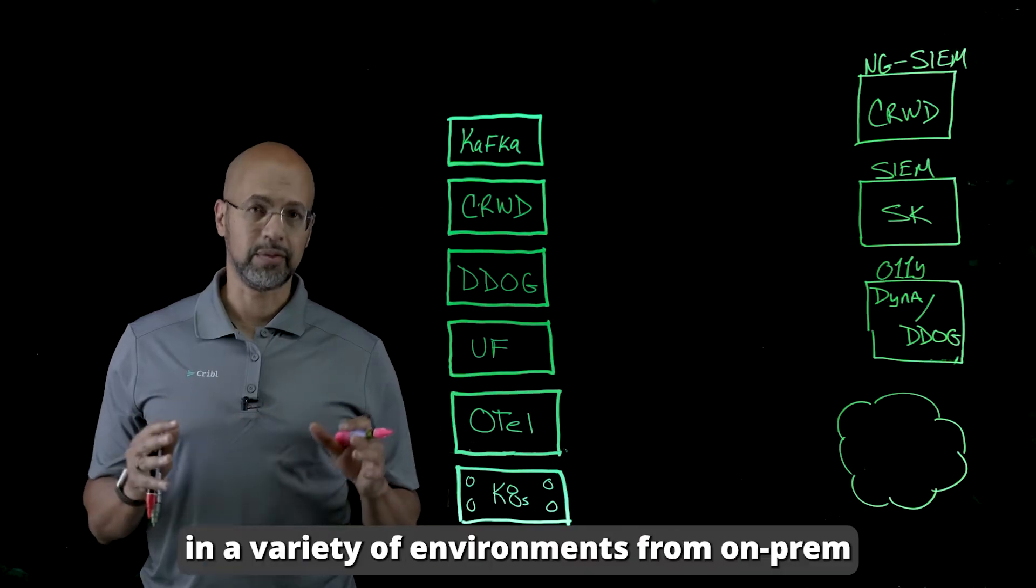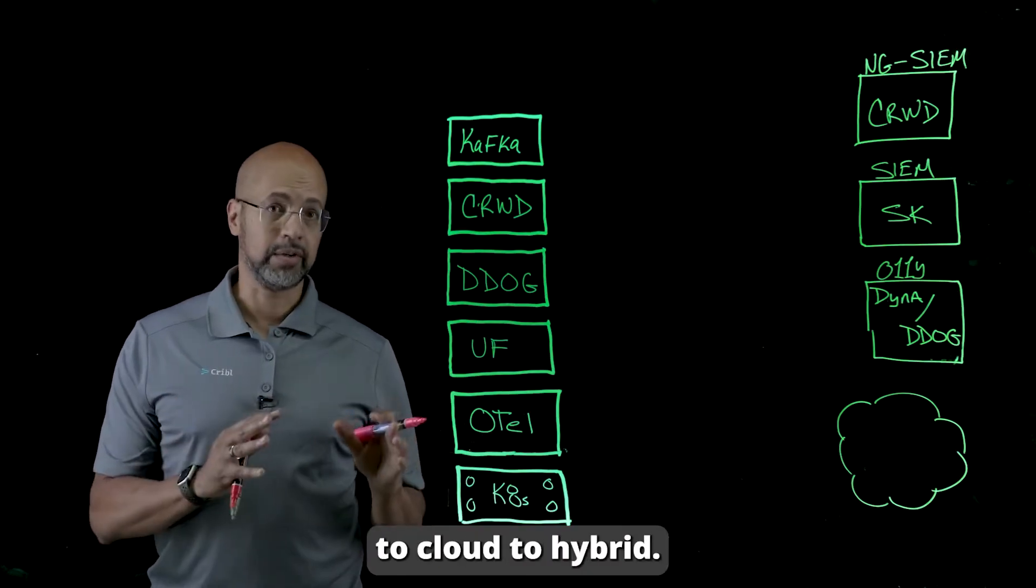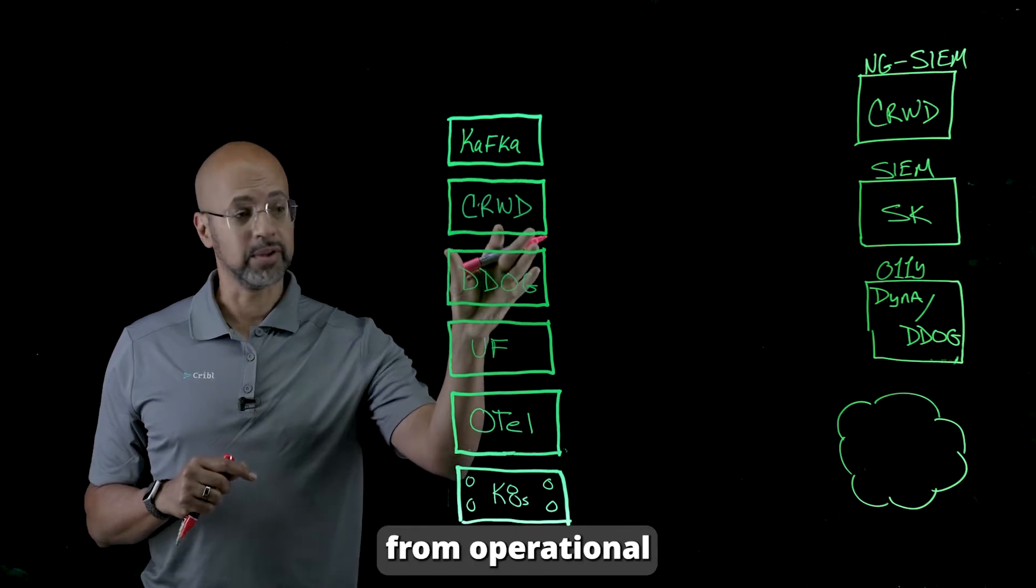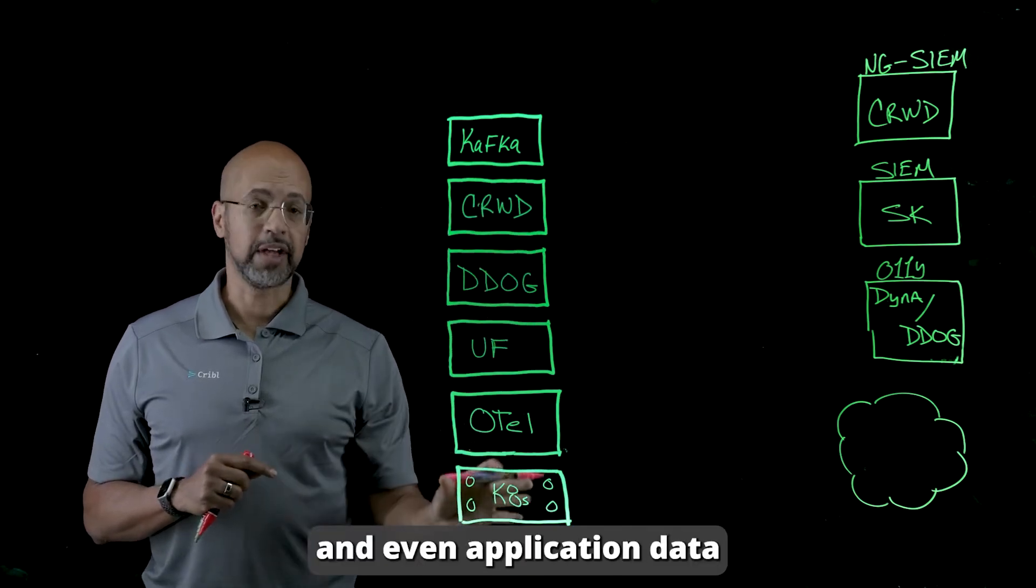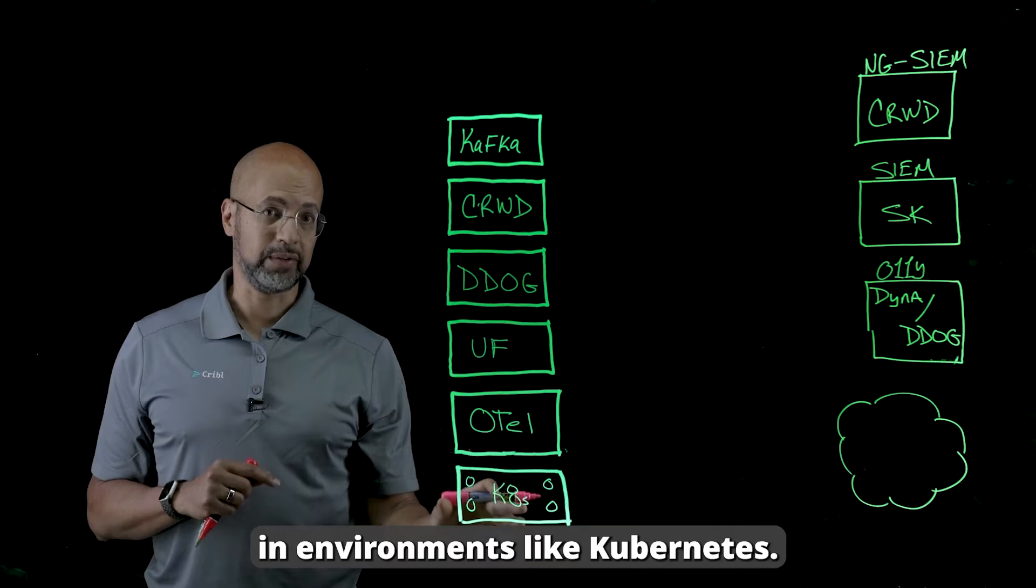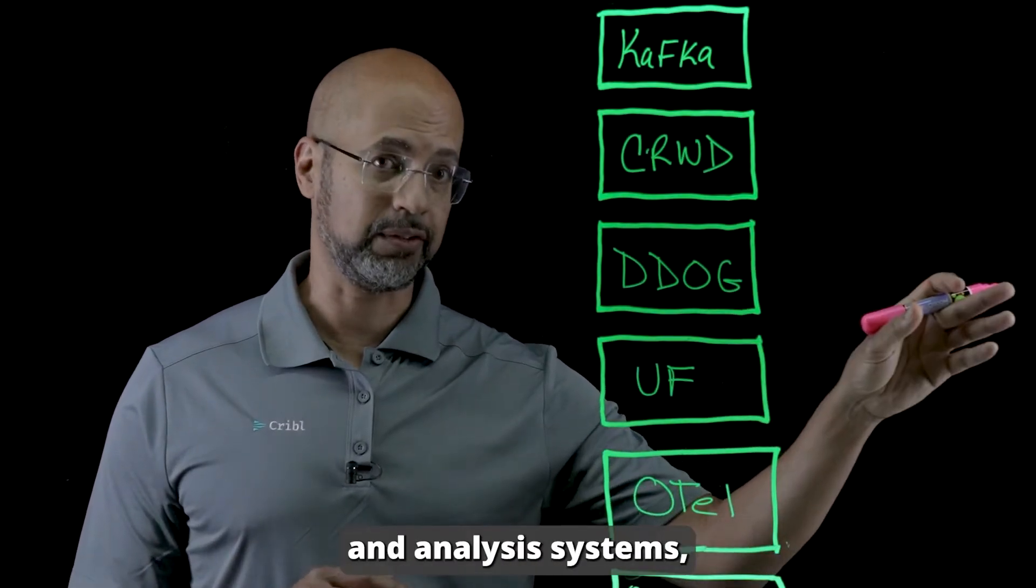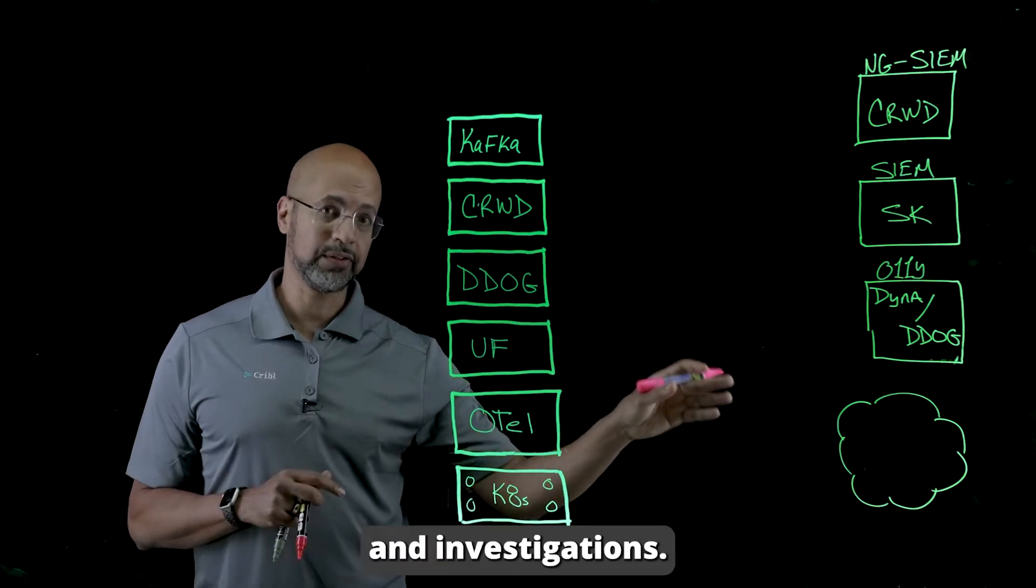Enterprises operate in a variety of environments from on-prem to cloud to hybrid. That leads to a variety of telemetry from operational to security and even application data in environments like Kubernetes. That data has to move to a variety of monitoring and analysis systems and be stored for compliance and investigations.